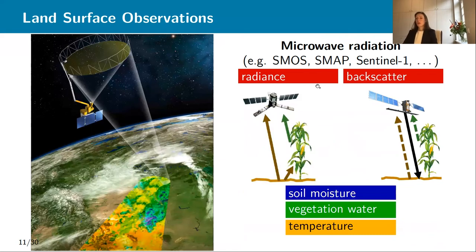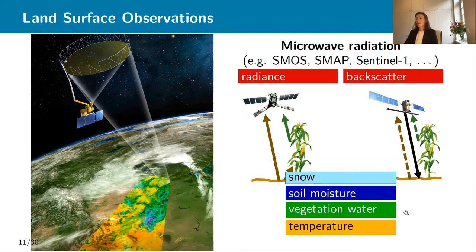There are two types of microwave radiation that we can collect. Either we can collect data passively — then we measure radiances — or actively, and then we measure backscatters. A passive sensor just hovers over the surface and receives natural emission from the soil. An active sensor sends radiation and waits for the return to understand how the surface has affected the return signal. That signal the satellite sees is affected by soil moisture, vegetation, water, and temperature. And if there is snow and the wavelength is short enough, snow is also affecting the microwave radiation.